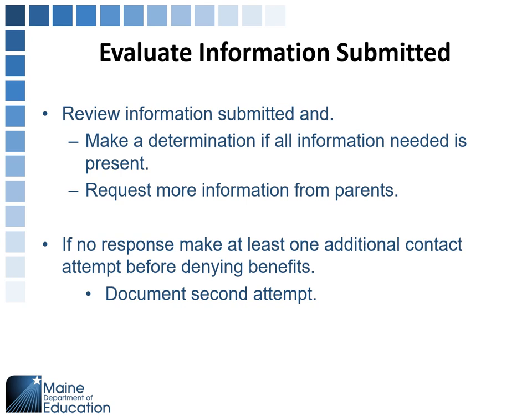That next step is making an additional attempt. If you haven't heard from the family, you must make a second attempt — it can also be a phone call. Keep notes: I called November 1st, I haven't heard from them, I need this information by November 3rd. If by November 4th you haven't heard from them, the process is over. Send them a final closing letter — they're no longer free, they're now paid status. Stick with the timeframes you give them; don't let it drag on for two months.